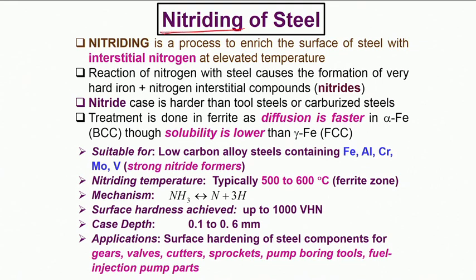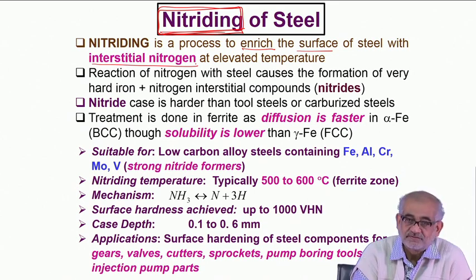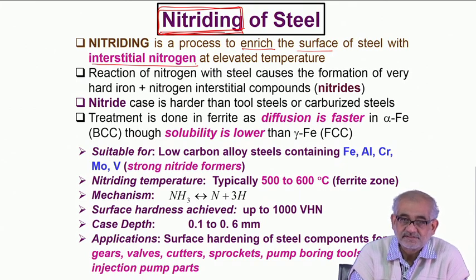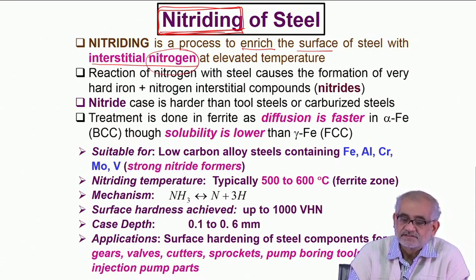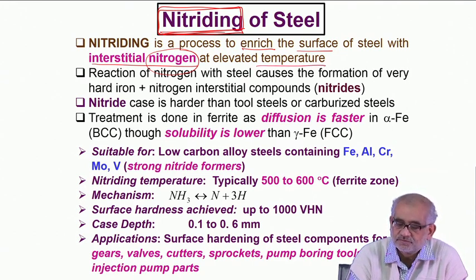The technique I am referring to is based on introduction of nitrogen instead of carbon. Today we are going to discuss nitriding of steel, and in particular gas nitriding. Nitriding essentially means enriching the surface of steel with nitrogen. Nitrogen is one of those four small elements — hydrogen, carbon, nitrogen, and oxygen — that can be accommodated in the interstices of alpha iron, or BCC iron.